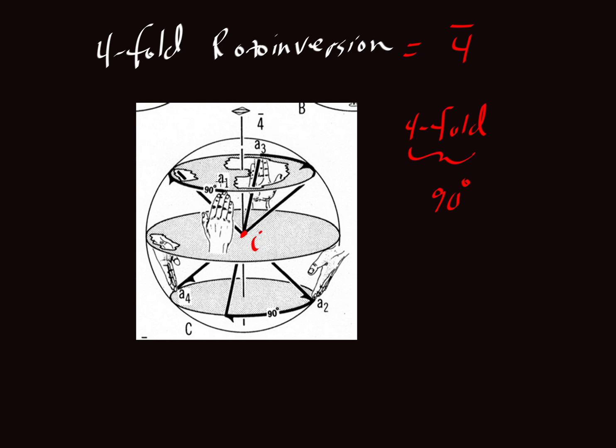So here's the bar four. So in this diagram, A1 is representing our first motif, in this case, a hand. Notice that it is a right hand.